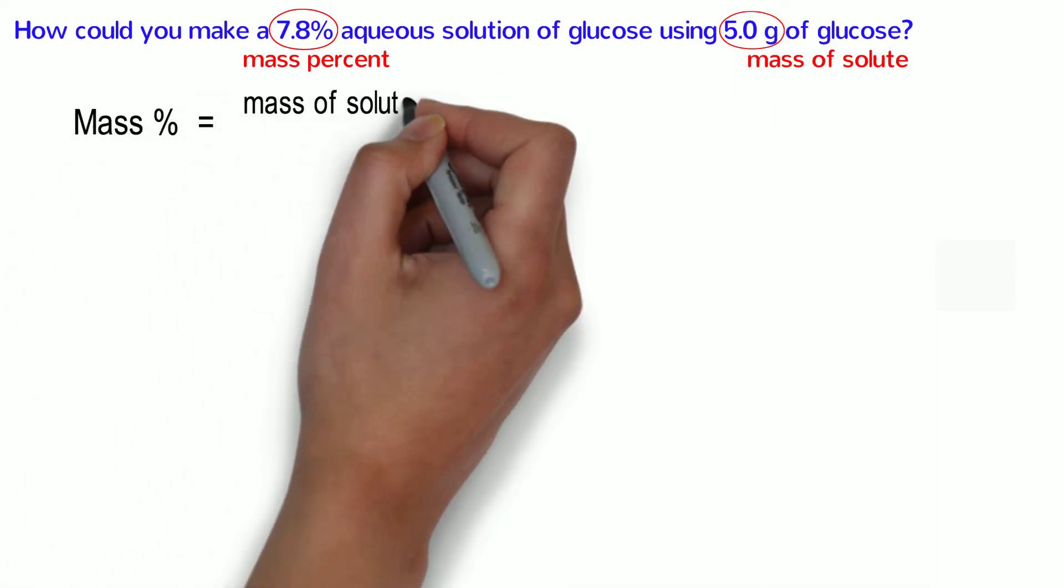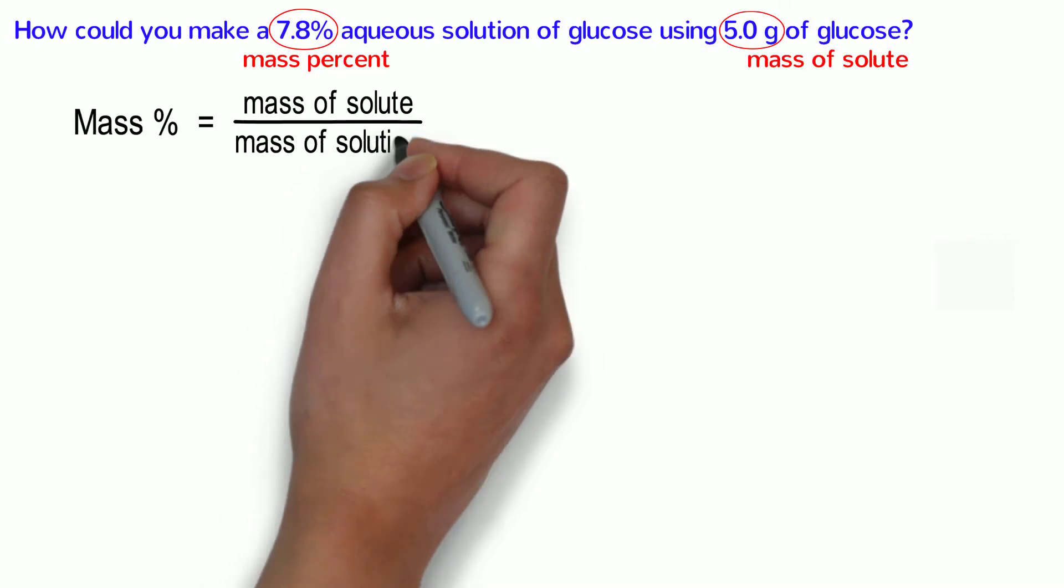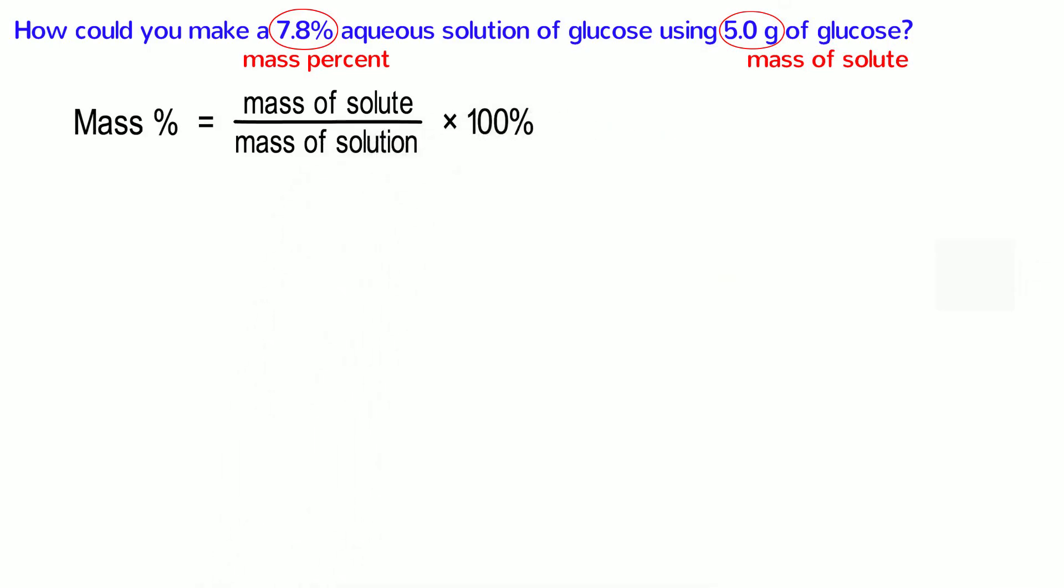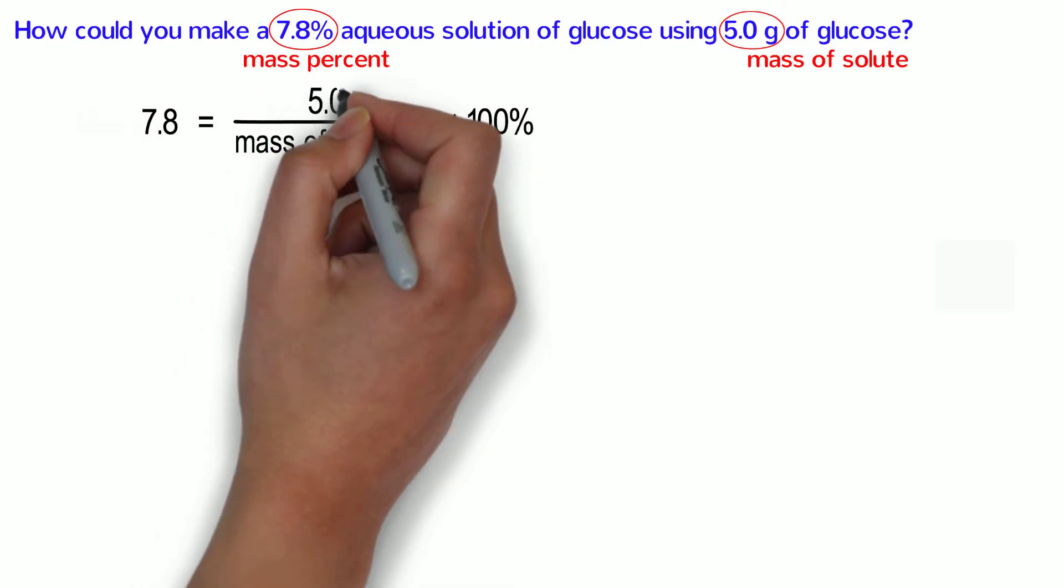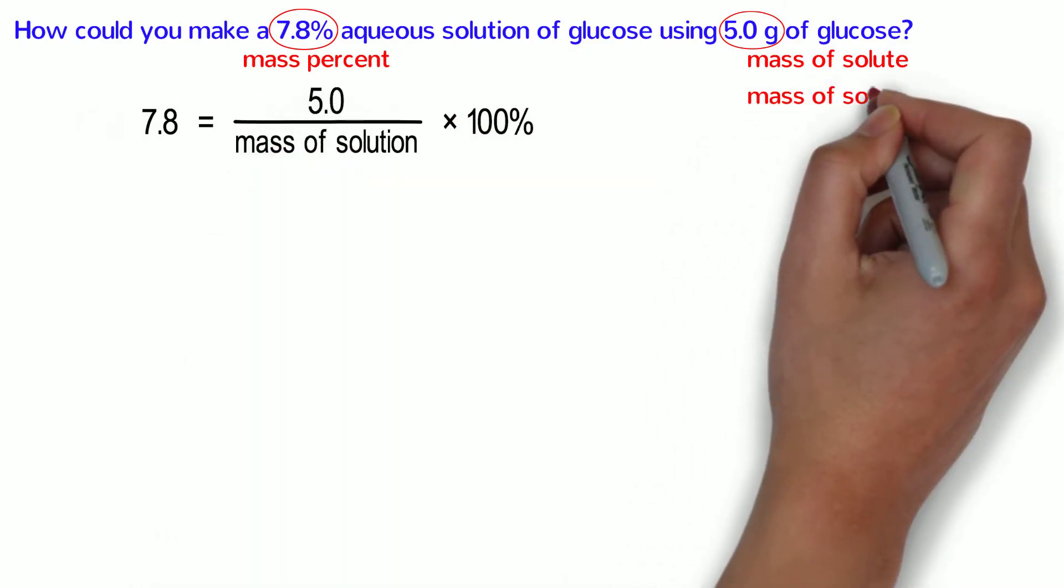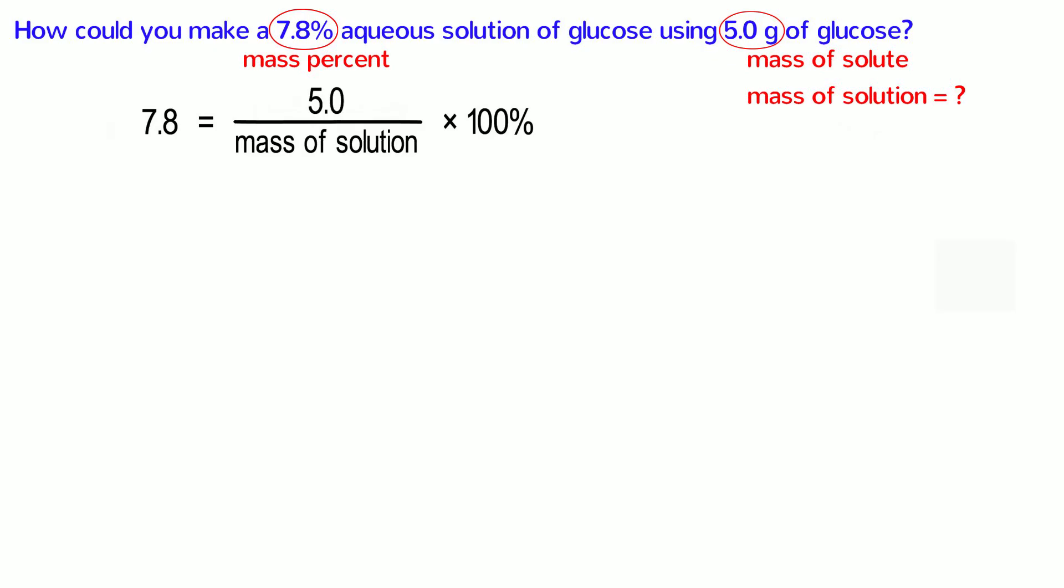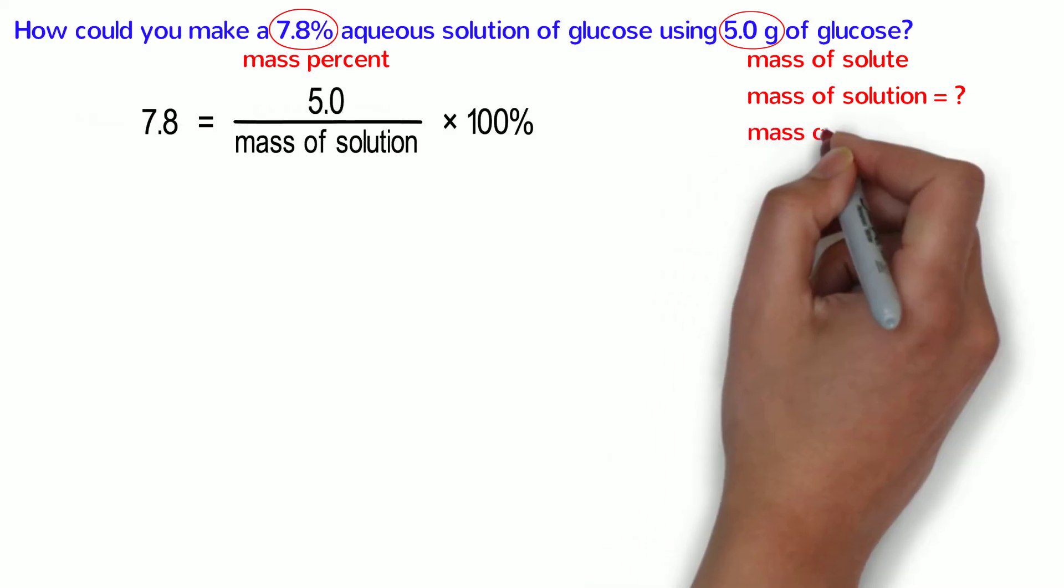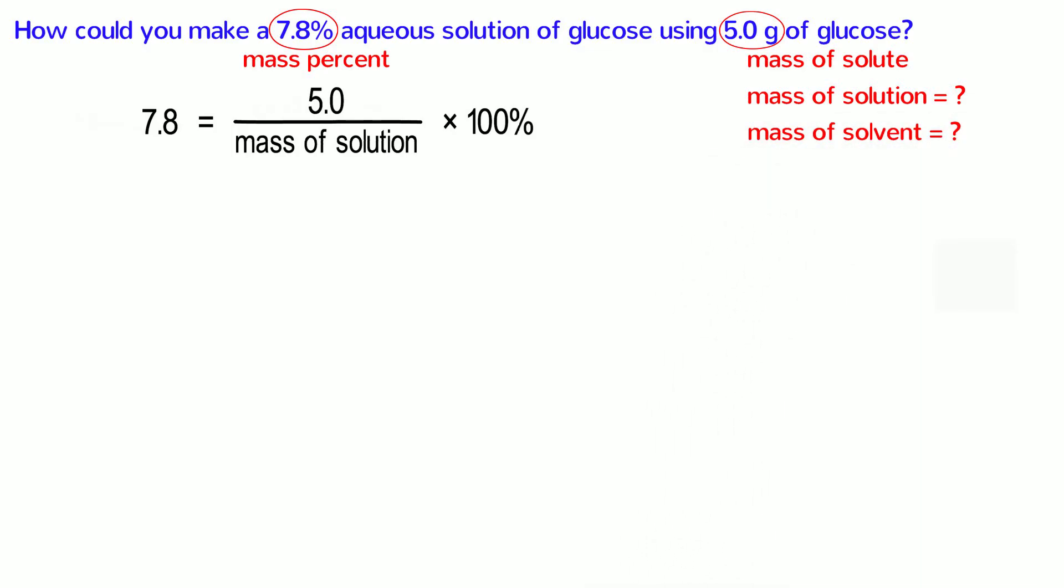Mass percent equals the mass of the solute divided by the mass of the solution, all times 100%. The mass percent is 7.8, and the mass of the solute is 5. That leaves the mass of the solution as the only unknown, so we should solve for that. However, when you make a solution, it is more practical to weigh the solvent all by itself, so we should ultimately solve for the mass of the solvent.